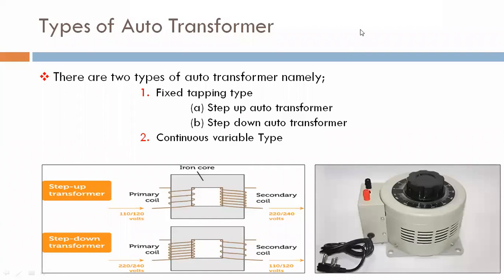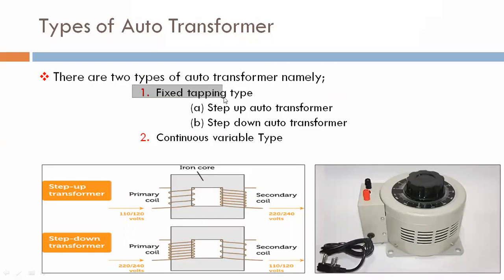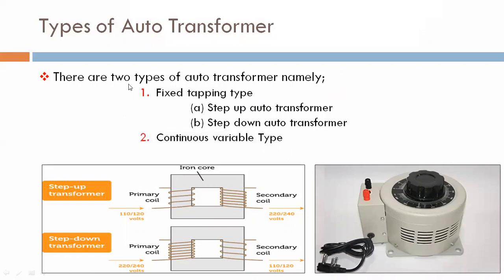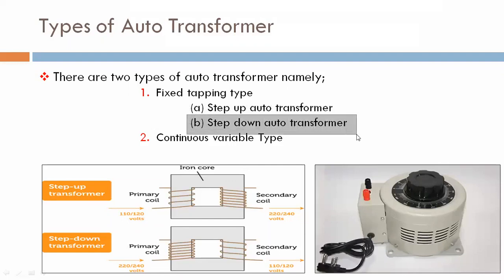Here, types of auto transformer. There are two types of auto transformer, namely: first, fixed tapping type auto transformer, and second, continuous variable type auto transformer. Fixed tapping type auto transformer has two types: A) step up auto transformer, and B) step down auto transformer.